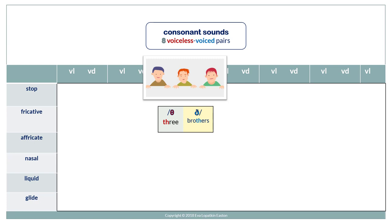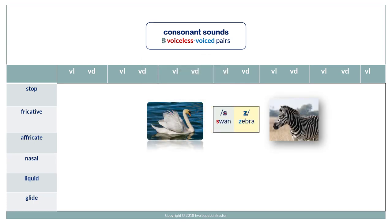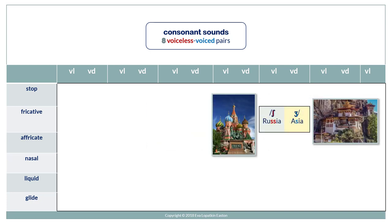Th (voiceless) and Th (voiced) — three, brothers. S and Z — swan, zebra. Sh and Zh — Russia, Asia.